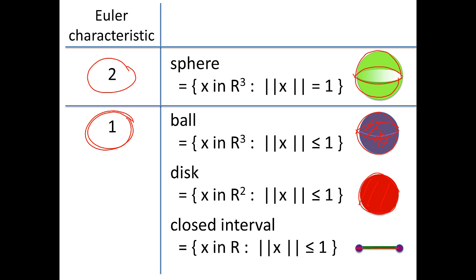Note, however, that these three objects are topologically different. You cannot change the dimension and preserve the topology. I can take a three-dimensional ball and flatten it quite a bit, but I can't flatten it so much that I change its dimension. So a three-dimensional ball is topologically different than a two-dimensional disc, which is topologically different than a one-dimensional closed interval. They do, however, all have the same Euler characteristic of one.